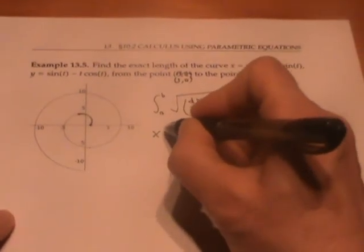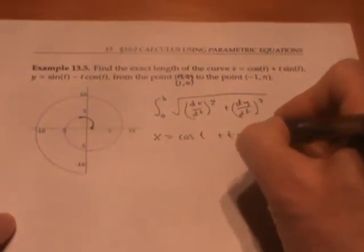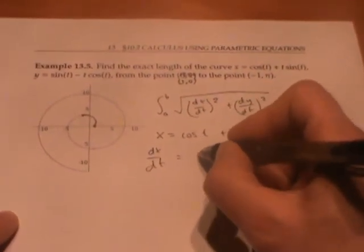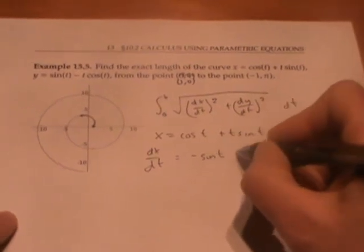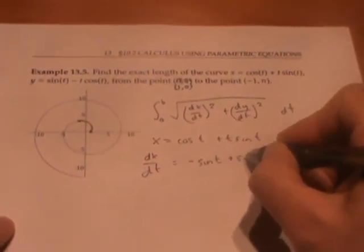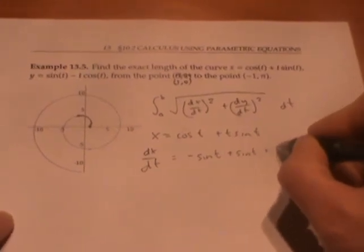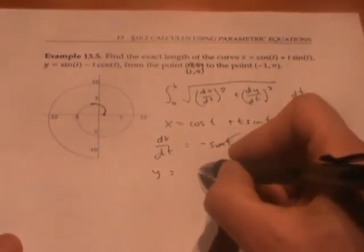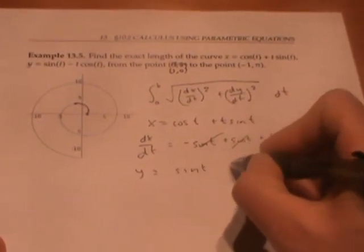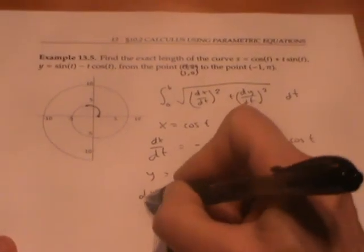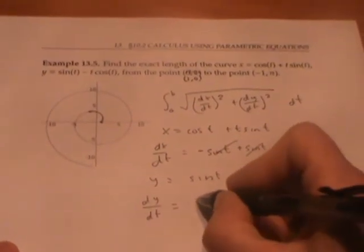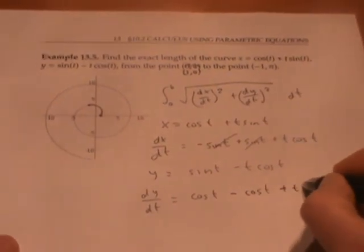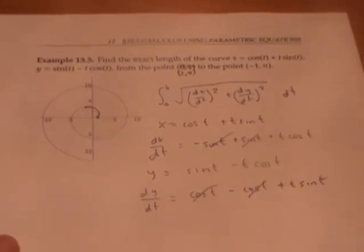Since x is cos(t) plus t sin(t), we know that dx/dt is negative sin(t), and using the product rule we have plus sin(t) plus t cos(t)—let's cancel. Since y is sin(t) minus t cos(t), we know that dy/dt is cos(t) minus cos(t) plus t sin(t), again using the product rule.